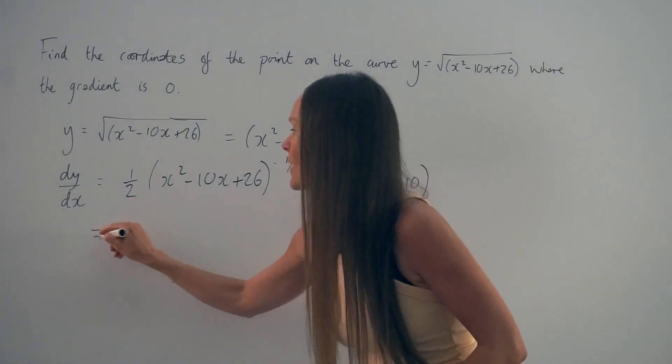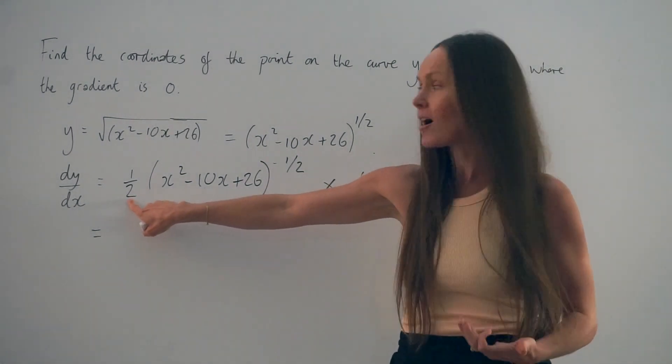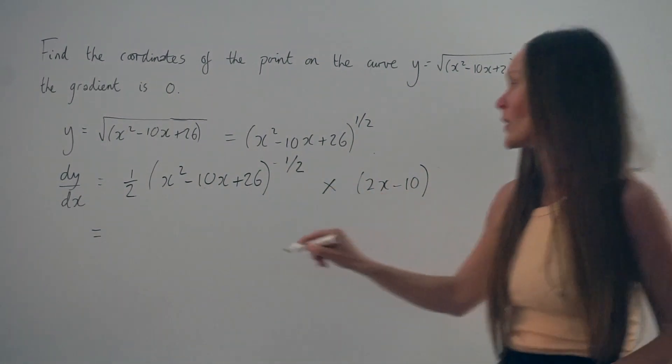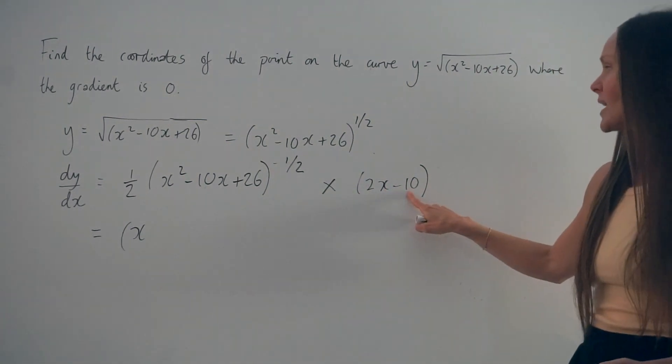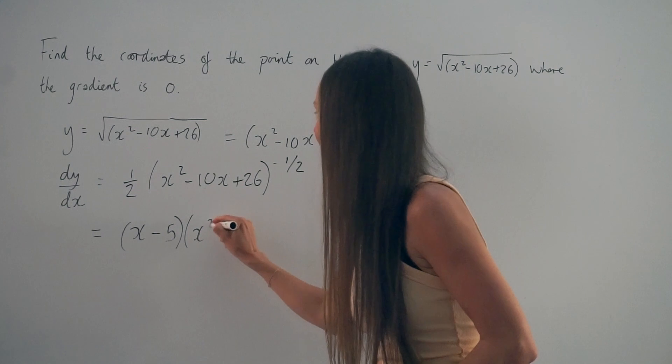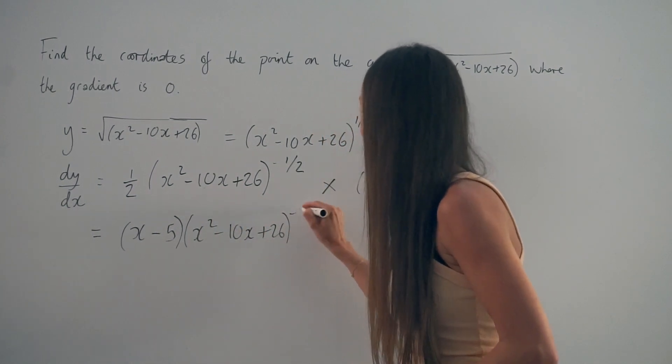So the easiest way to simplify this is to multiply this bracket by the number at the front, a half. So a half multiplied by 2x is 1x. And a half multiplied by negative 10 is negative 5. And remember to leave that in brackets. And we're multiplying these together. So this is the derivative.